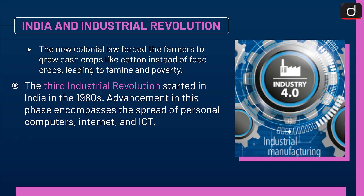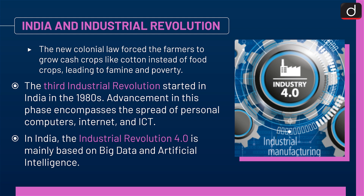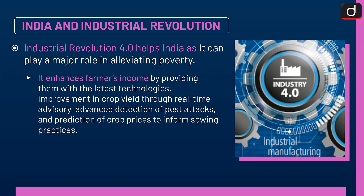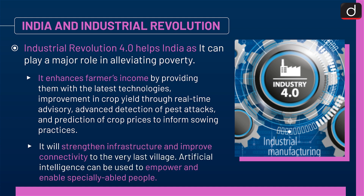In India, Industrial Revolution 4.0 is mainly based on Big Data and Artificial Intelligence. It helps India as it can play a major role in alleviating poverty. It enhances farmers' income by providing them with the latest technologies, improvement in crop yield through real-time advisory, advanced detection of pest attacks, and prediction of crop prices to inform sowing practices. It will also strengthen infrastructure and improve connectivity to the very last village.